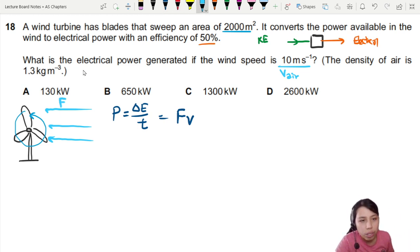The wind exerts a force because it is moving at a certain speed of air. But then this V here is not the speed of the air. This V is the velocity at which the object is being moved.